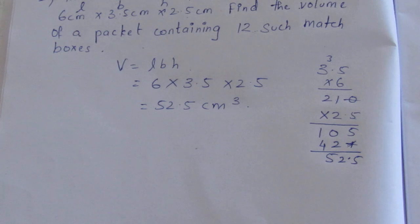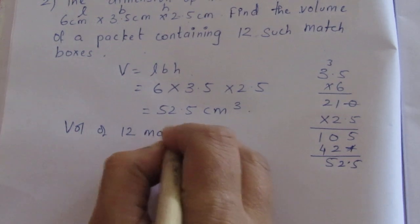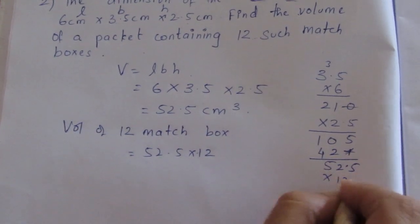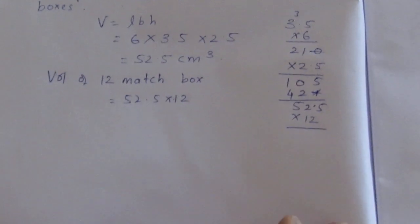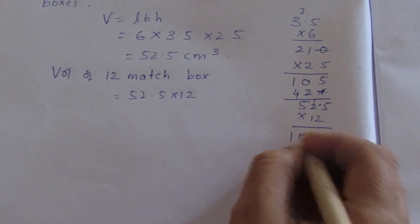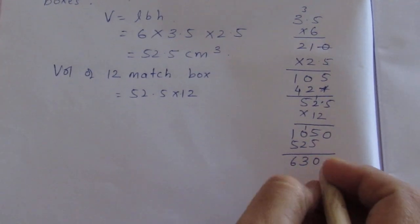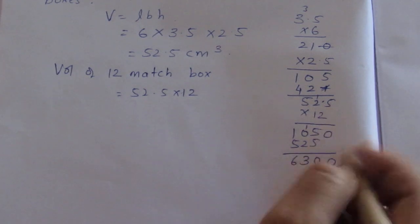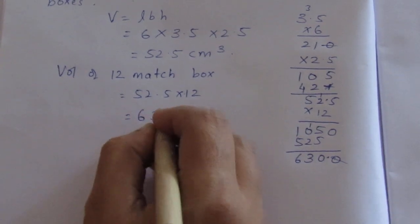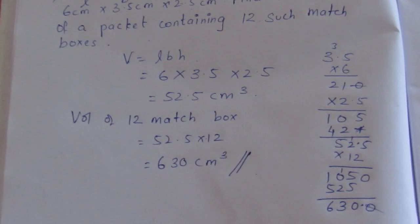The volume of 12 matchboxes: 52.5 × 12. 52 × 10 = 520, 52 × 2 = 104, plus 0.5 × 12 = 6. Total: 630 cm³. This is the answer. Thank you.